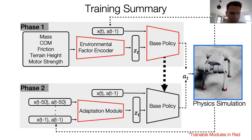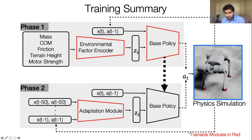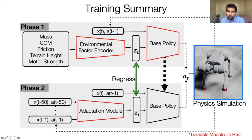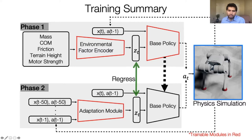In phase two, in contrast to phase one's reinforcement learning, we freeze the base policy and only train the adaptation module via supervised learning — it is just a regression problem. You collect data in simulation and train the adaptation module, whose output Z-hat should match the output of the environment encoder. You have this target in simulation because all parameters are known there. Then at deployment time you put them together: throw away the environment encoder and use the adaptation module with the base policy.